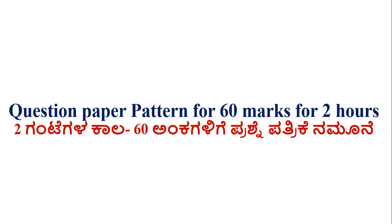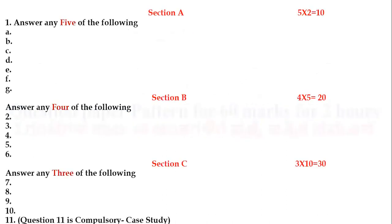Let us see the question paper pattern for 60 marks, which gives you 2 hours. We have three sections: Section A, B, and C. In Section A, they will be asking 2 marks questions. In Section B, 5 marks questions. In Section C, 10 marks questions. And the 11th question will be compulsory — that is, a case study will be asked there.